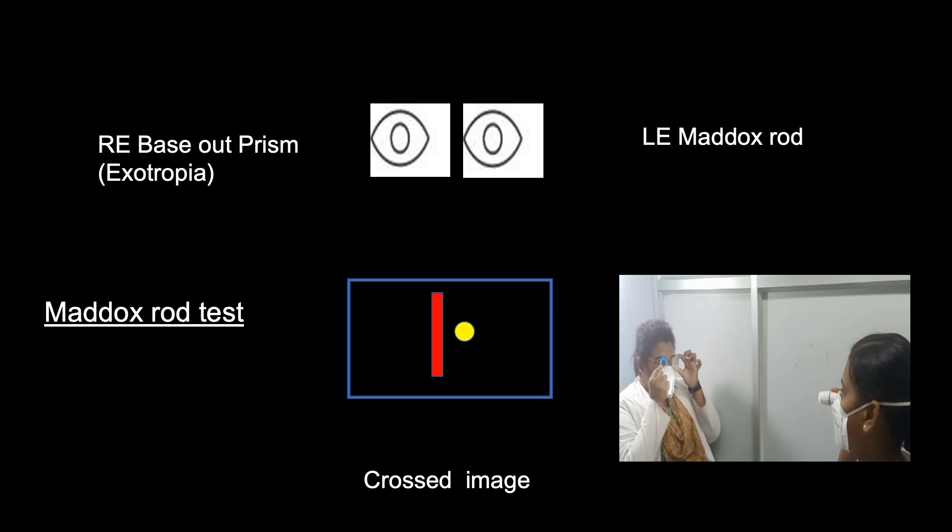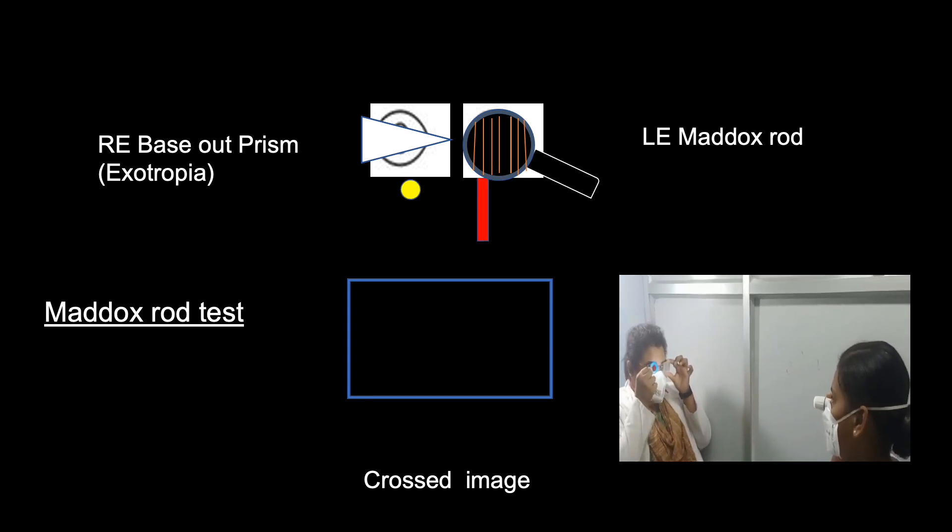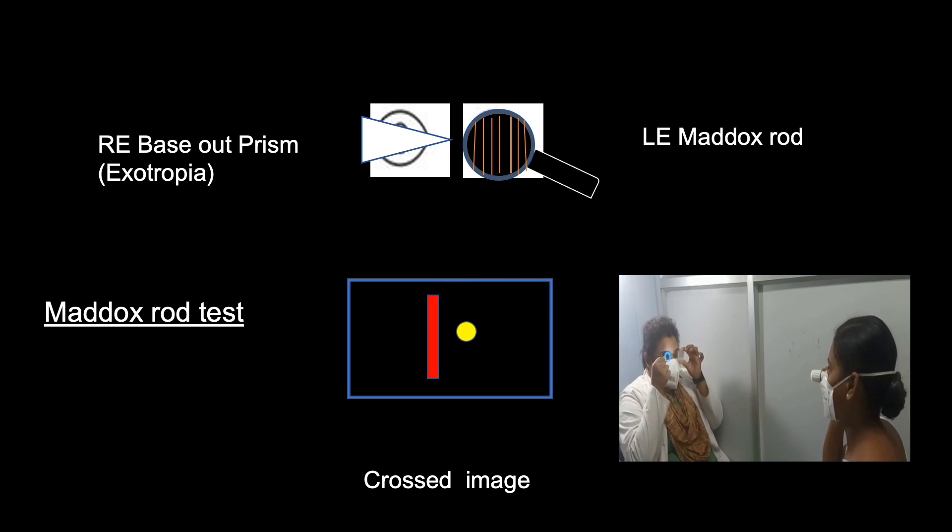And base out prism is placed in front of the right eye making the eye exotropic, we can see a crossed image. To neutralize the image, place the prism in the opposite direction so that they learn how to neutralize the subjective deviation.